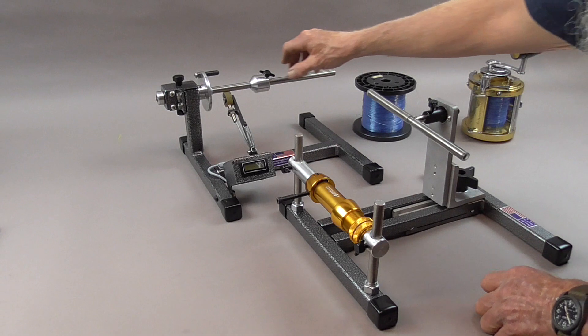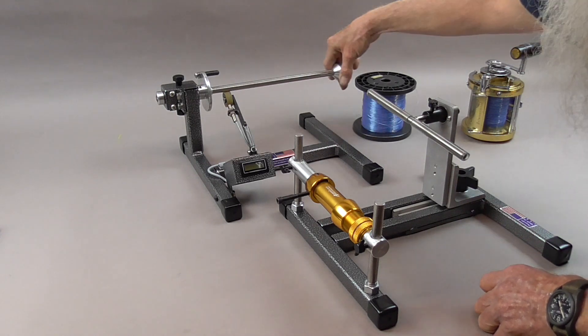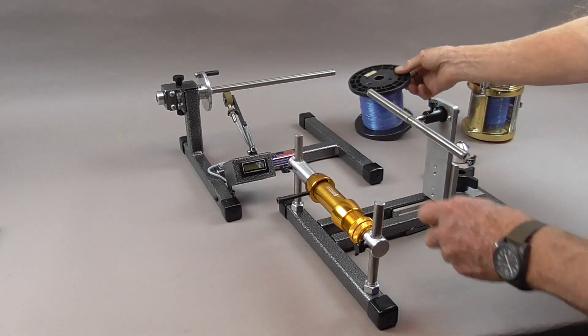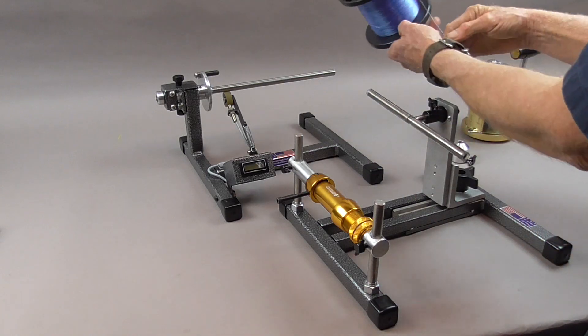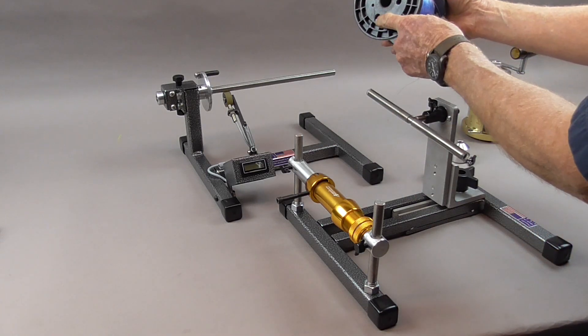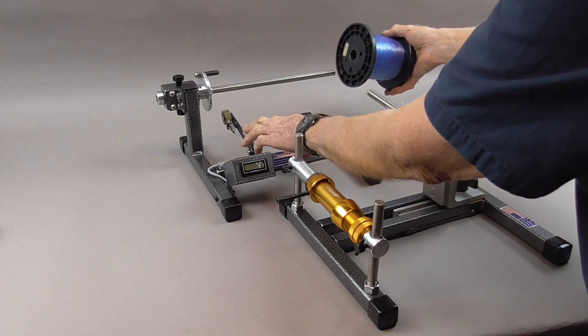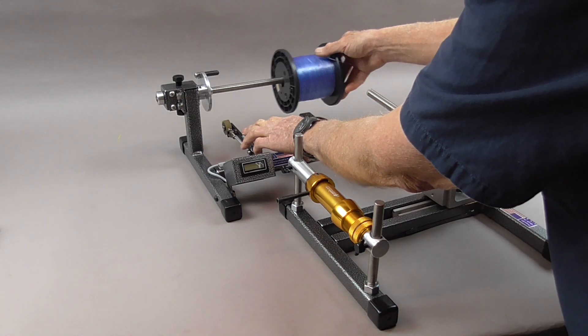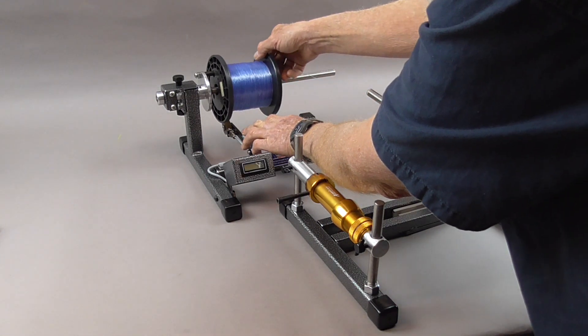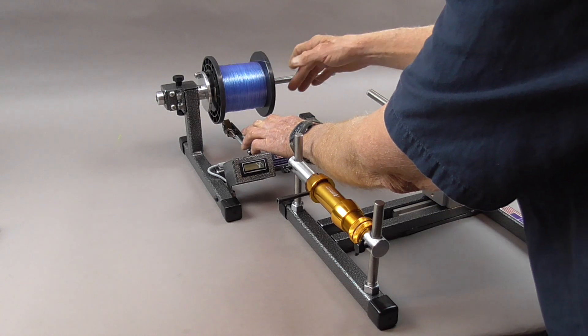Now let's put the spool and reel on. This particular take-up spool, bulk spool rather, I had to drill a hole in it. It wasn't any big deal. I took a 3/8 drill and put a hole in it.